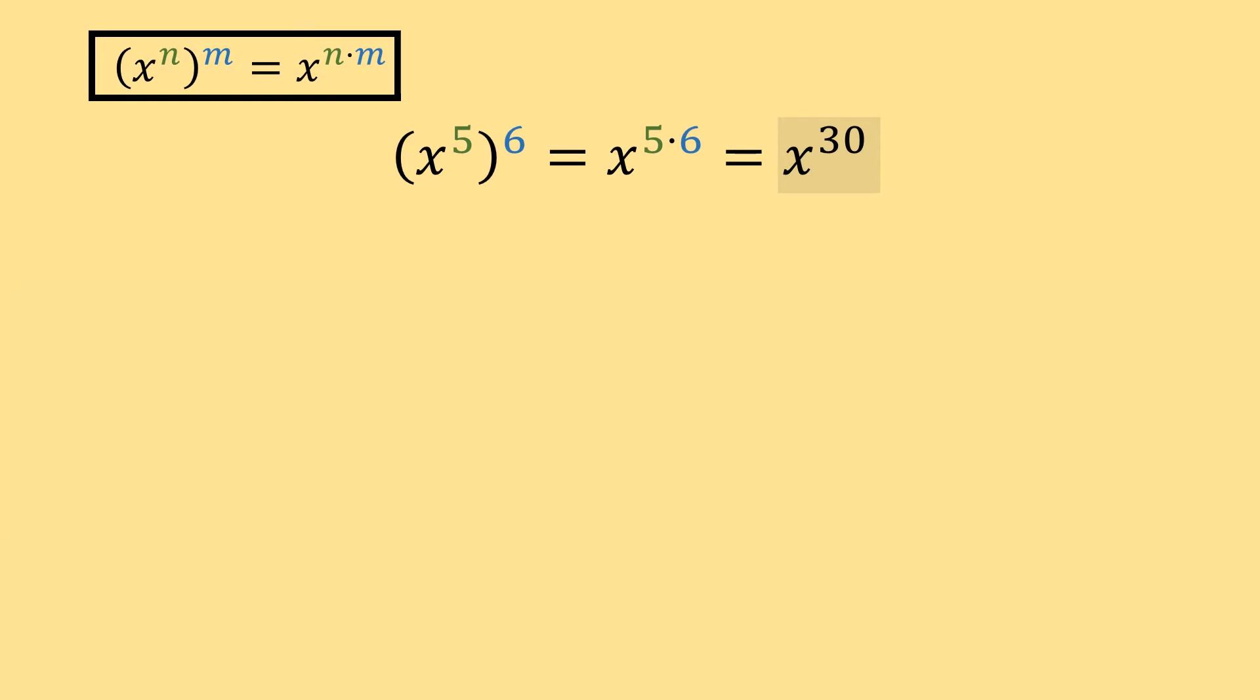This isn't just the case for having one variable within the parentheses. Let's look at this example here, where we have x raised to the fifth times y squared times z to the third, all of that raised to the fourth power. It's important to note that everything is multiplied together here, and so we can use this rule and distribute this four and multiply it by each one of the powers.